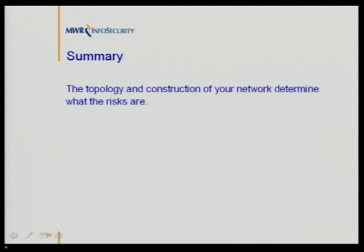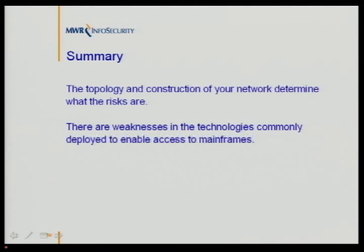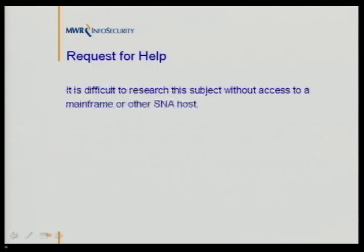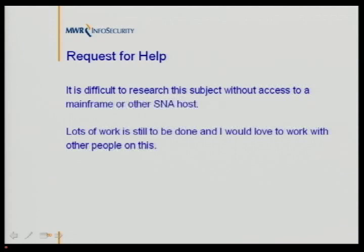As an overall summary: make sure the topology and construction of your network are known to you, understand what risks are exposed through that. As demonstrated today, there are weaknesses in the technologies used to access mainframes — make sure you understand what they are and put measures in place to mitigate against the risks. That's good information security practice. A request for help: I don't have access to a mainframe at this point. If anyone does and wants to get involved in some of this research, please let me know — I'd love to talk to people who run these mainframes and networks day to day. There's lots more work to do and I'd love to work with others on this subject.